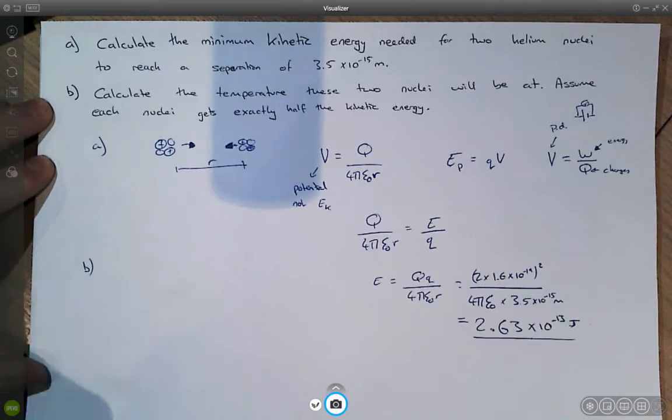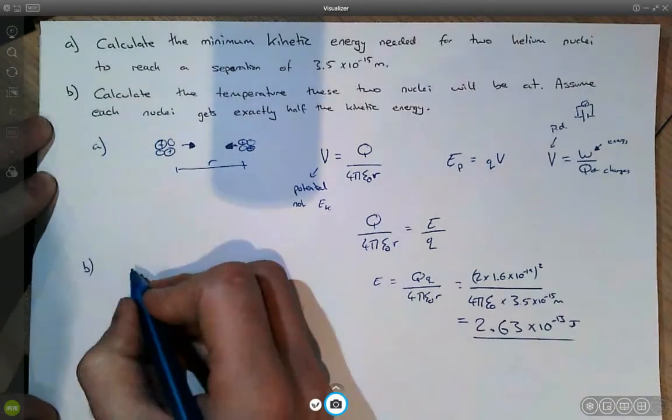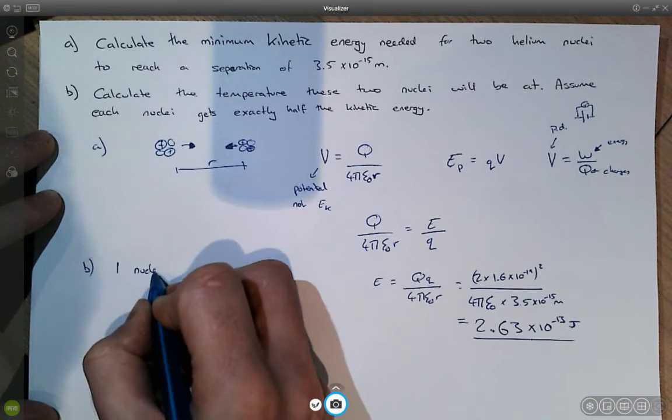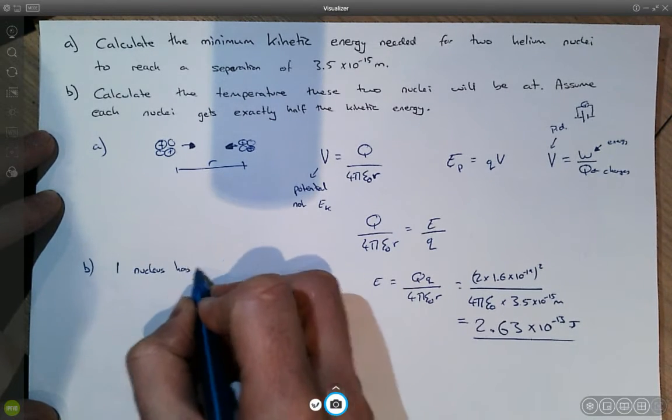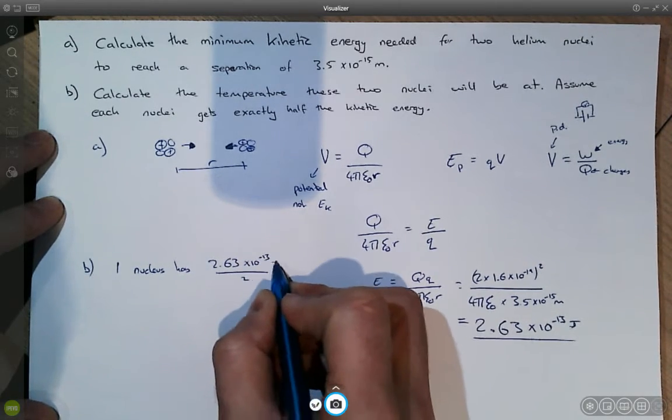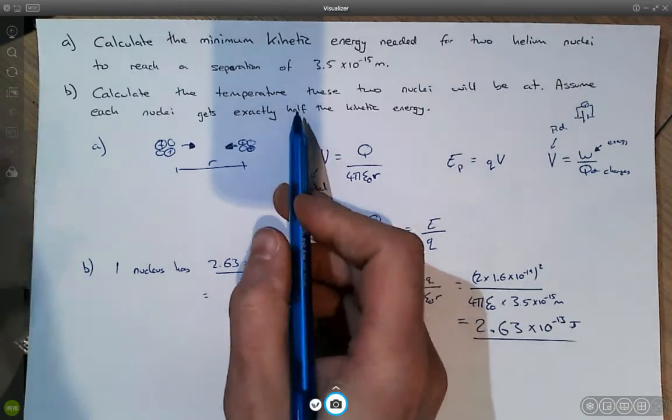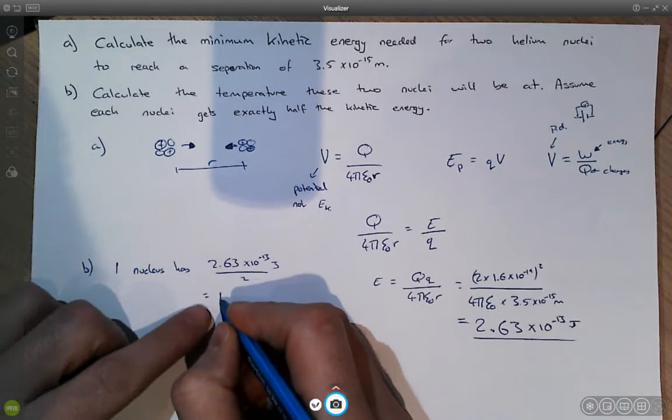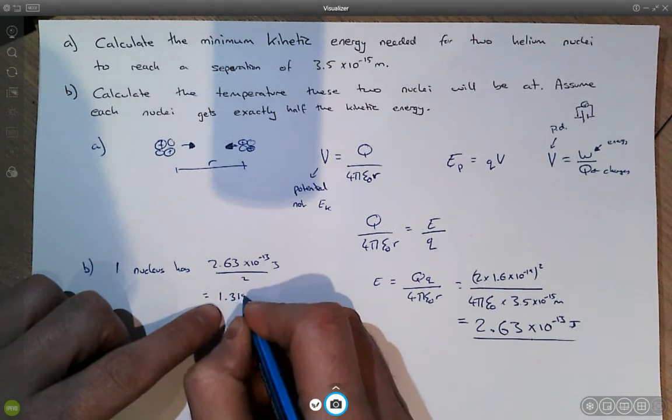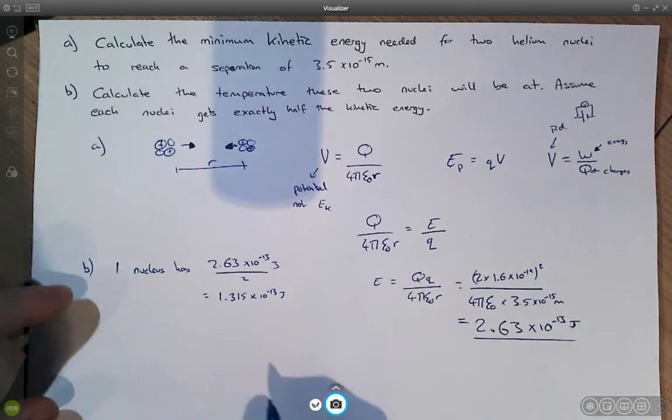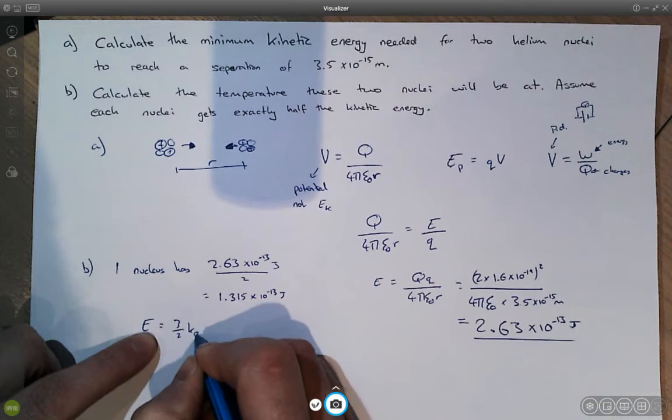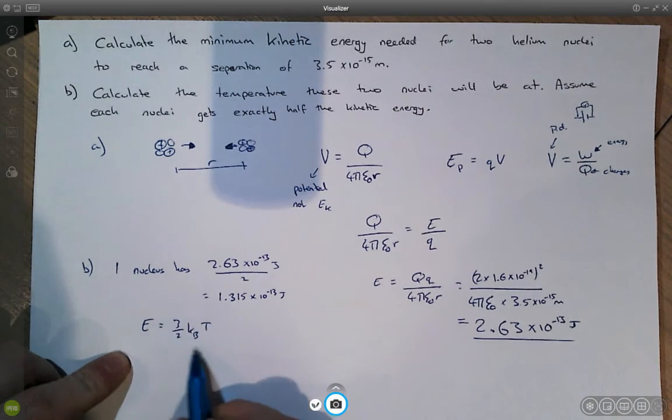In part B, we're asked to find the temperature that this relates to. So how much kinetic energy will one nucleus have? It will obviously have the total kinetic energy divided by two, because our question has told us to assume that. So that's going to be 1.315 times 10 to the minus 13 joules. And then what is our relationship between energy and temperature? It's given by this relationship here.